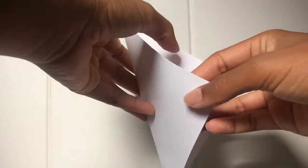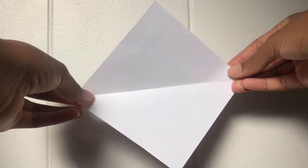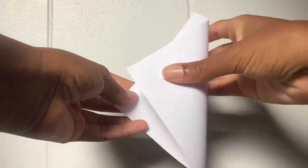The first step is that you are going to fold your paper in half into a triangle shape. Once you have your triangle shape, you're going to open it back up and then flip it the other way and fold it again into a triangle shape.